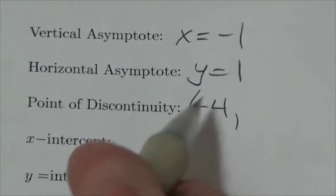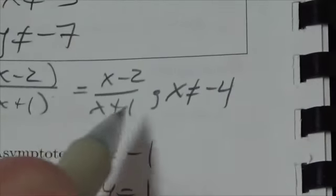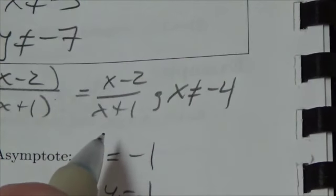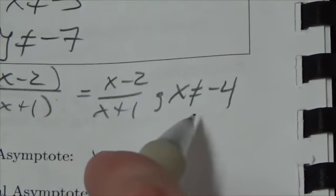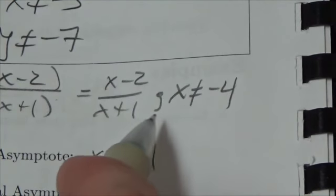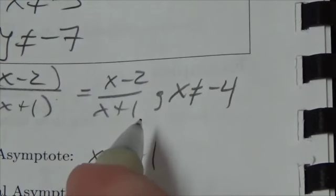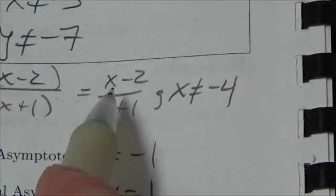To get the y-coordinate of the point discontinuity, I'm going to take that negative 4 and go to the simplified form here. Because notice that this simplified form does not actually have a problem at negative 4. I have to impose that on the problem. So take the negative 4 and plug it in there.